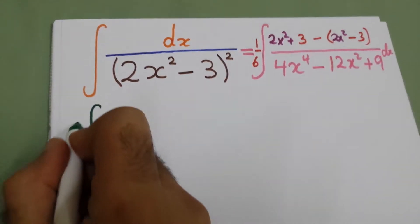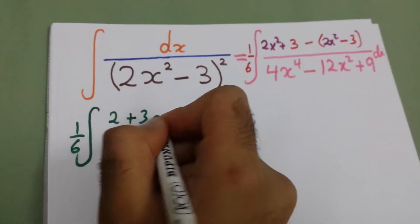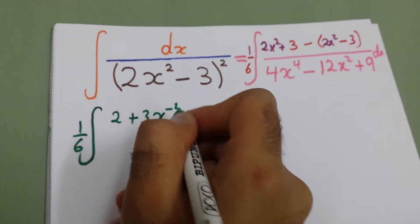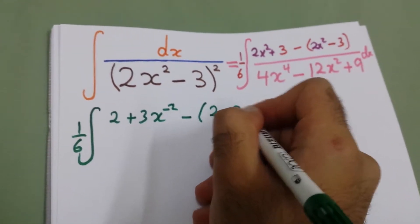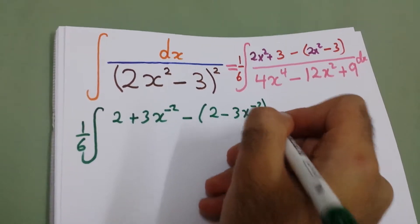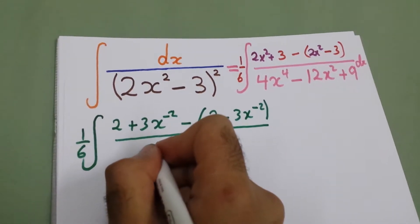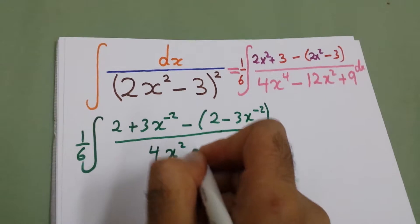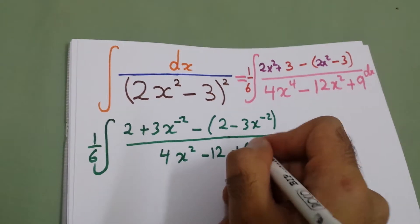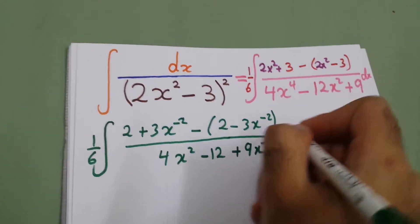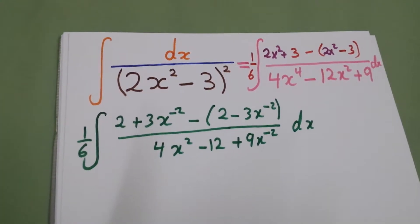So the integral will be 1 over 6 minus, and we have (2 + 3x⁻²) minus (2 − 3x⁻²), all over 4x² minus 12 plus 9x⁻² dx. Now we will complete the square in the denominator.